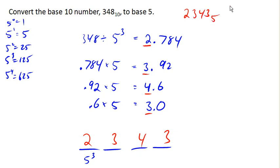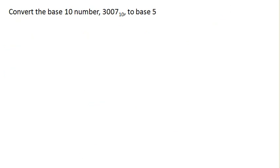Let's do one more real quick. So here's another one. And so we start with 3,007, and we're going to divide this by...now the highest power that divides in is 625. That's 5 to the 4th is 625. So we divide here, and we get 4.8112.